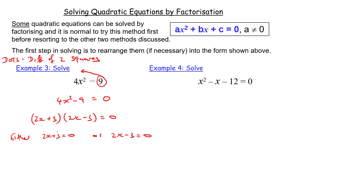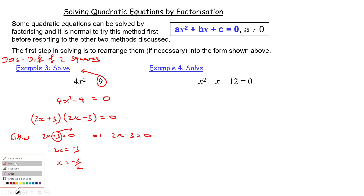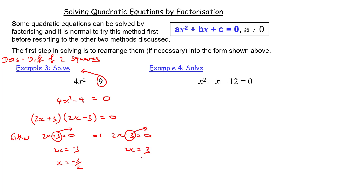Floating the plus 3 over: 2x equals minus 3, so x equals minus 3 over 2. On the other side, floating the minus 3 over: 2x equals 3, so x equals 3 over 2. Therefore x equals minus 3 over 2 or plus 3 over 2.